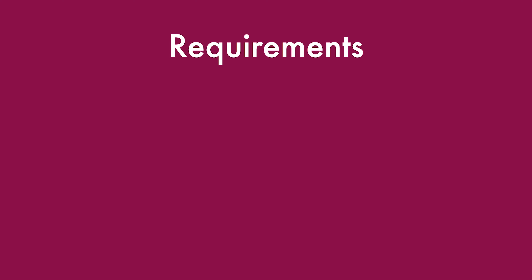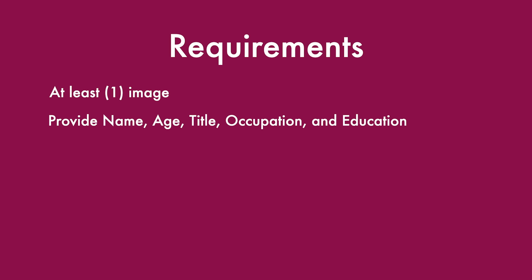So that's the gist of it — you'll be making a dating profile. Now let's get into the specifics. You'll need to submit your assignment in the appropriate Dropbox as a PDF on D2L. Your dating profile must include the following things: first, at least one image — more than one is encouraged but one is the minimum. Second, you'll need to provide the name, age, official title or occupation, and education of your cultural theorist. Third, after doing some research, pick an anthem and one or more top musical artists that might resonate with the thinker you've been assigned.